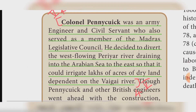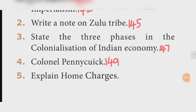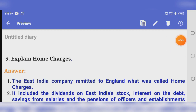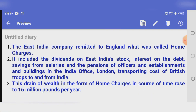Question five: Explain home charges. The East India Company remitted to England what was called home charges. It included East India stock interest, interest on debt, savings from salaries, pensions of officers, establishments and buildings in the India Office, and the land and transport costs of British troops to and from India. The drain of wealth in the form of home charges rose to 16 million pounds per year.